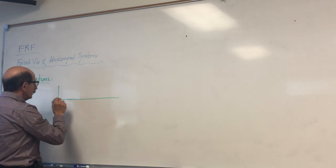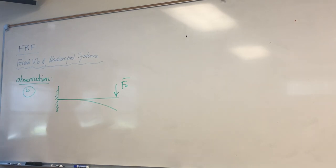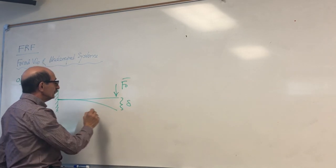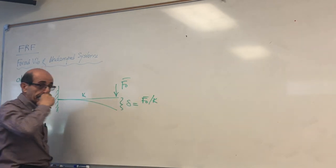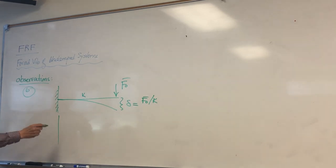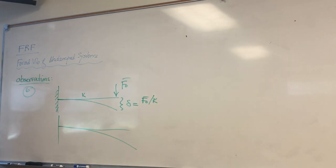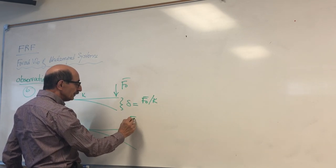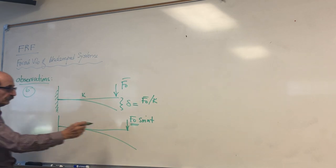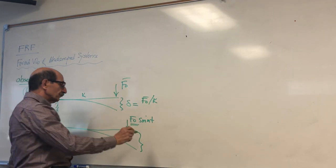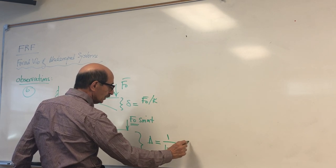If you look at the response of a structure under the action of a load — let's say a static load — the displacement, and the stiffness of this beam is k, the static displacement would be f0 over k. Now from the response of an undamped system under harmonic load, if instead of this static load we have a cyclic load whose amplitude is the same, then the dynamic displacement — let's call that delta — is 1 over r squared times that delta.